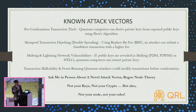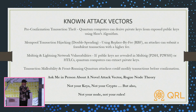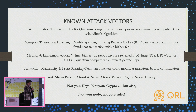These are some known attack vectors. A couple of them have to do with the double spend — and if you've studied Bitcoin history, you know that the double spend problem was one of the biggest problems that Satoshi's white paper solved, based on solving the Byzantine Empire problem. Ask me in person about a novel attack vector called rogue node theory.